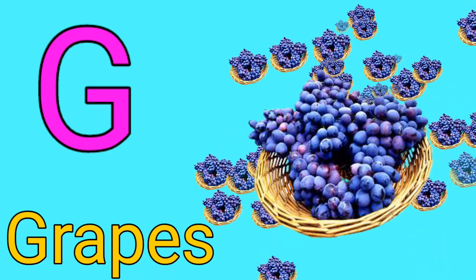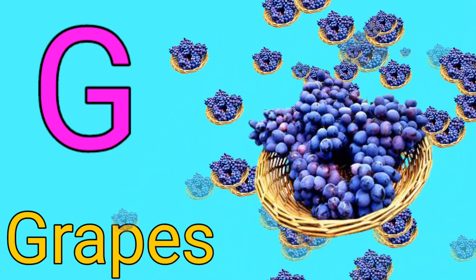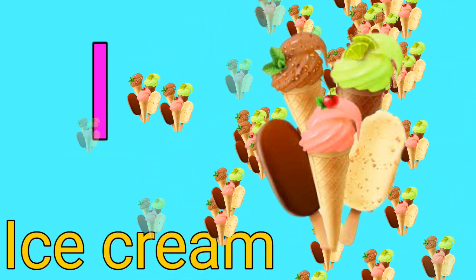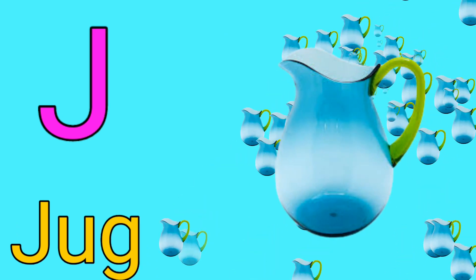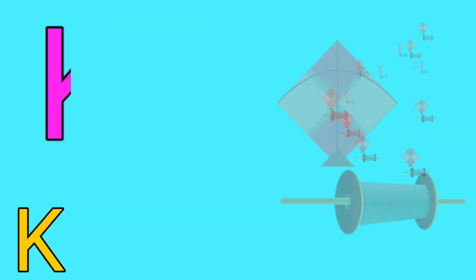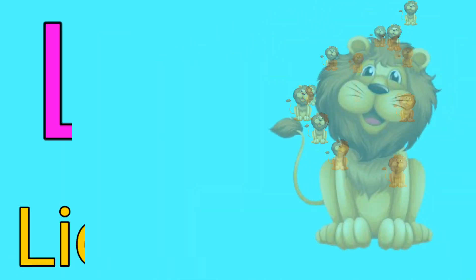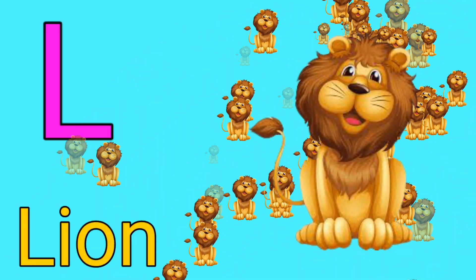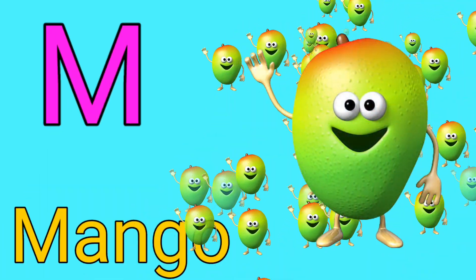G for grass. H for hen. I for ice cream. J for dog. K for kite. L for lion. M for mango.